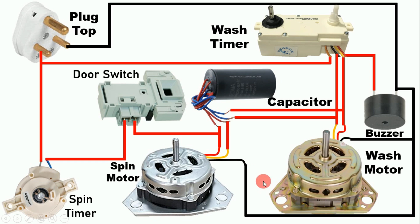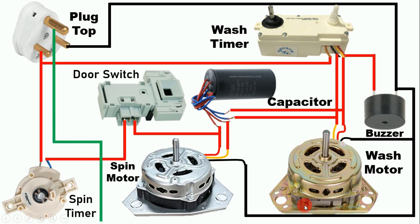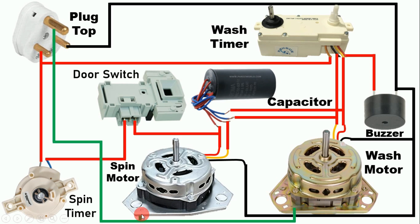After this, we have to connect both motors to earthing as well. From the thick earth pin of the plug top, connect a wire to the body of the wash motor. Earthing is used so that if by chance current flows through the body of the motor, it gets grounded, protecting us from electric shock. Similarly, loop a wire from the earth point and connect it to the body of the spin motor. The connection of the washing machine is now complete.